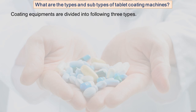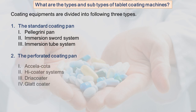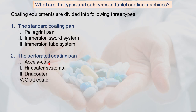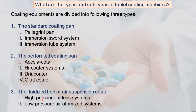Coating equipment is divided into three types. First is the standard coating pan, subdivided into the Pellegrini pan, immersion sword system, and immersion tube system. Second is the perforated coating pan, subdivided into Acela Cota, Hi Cota, Tria Cota, and Glatt Cota. Third is the fluidized bed or air suspension coater, with high-pressure airless or low-pressure air-atomized systems.